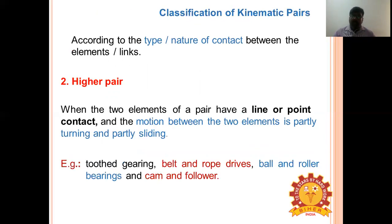A higher pair exists when two elements have line contact or point contact. Line contact examples: belt drive, rope, chain drives, and bearings. Point contact examples: gears, cam and follower, a pair of friction wheels, and ball bearings.